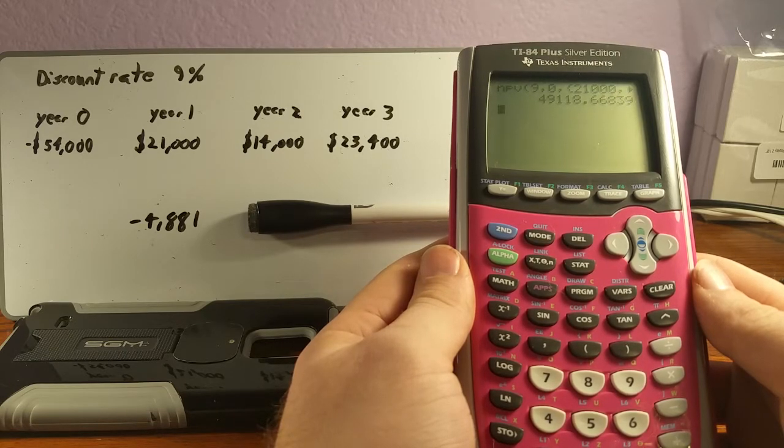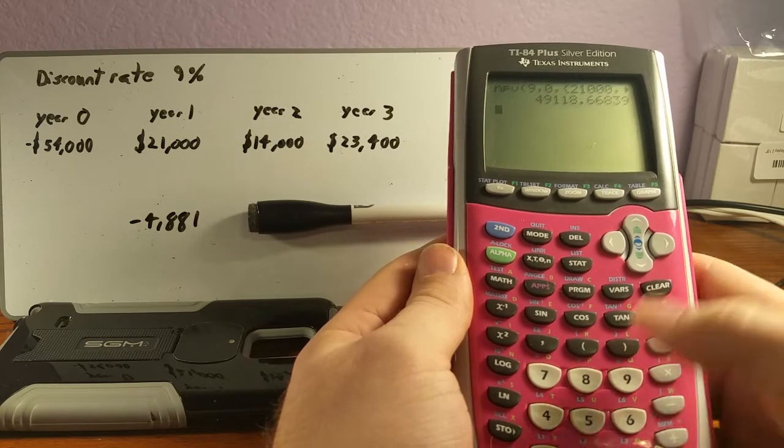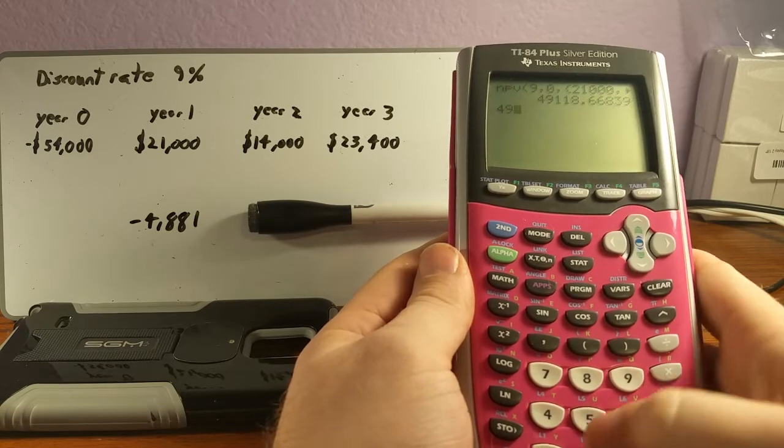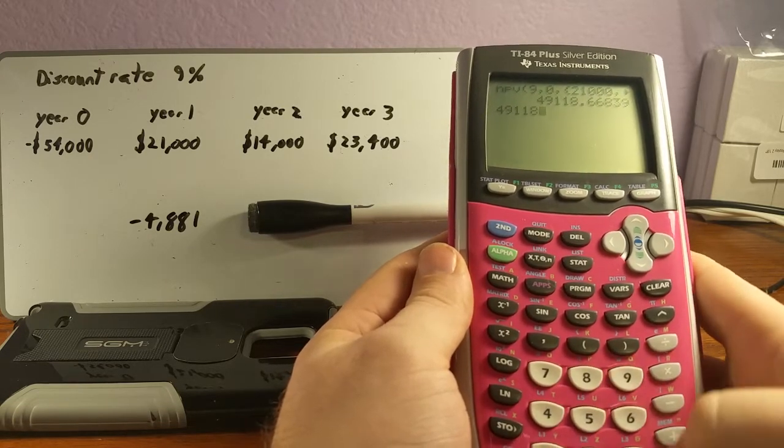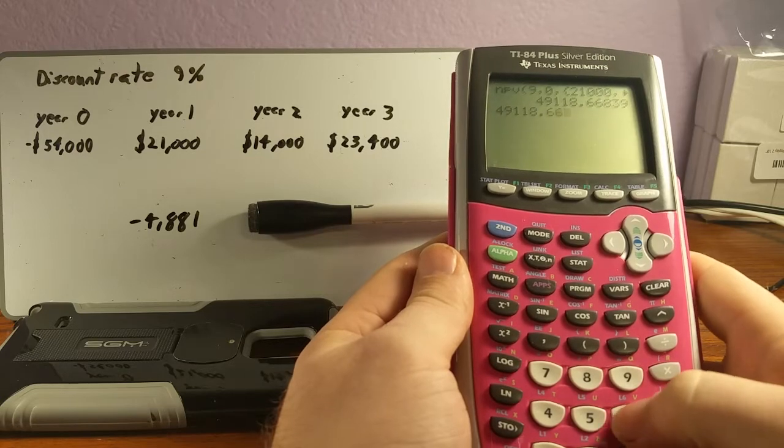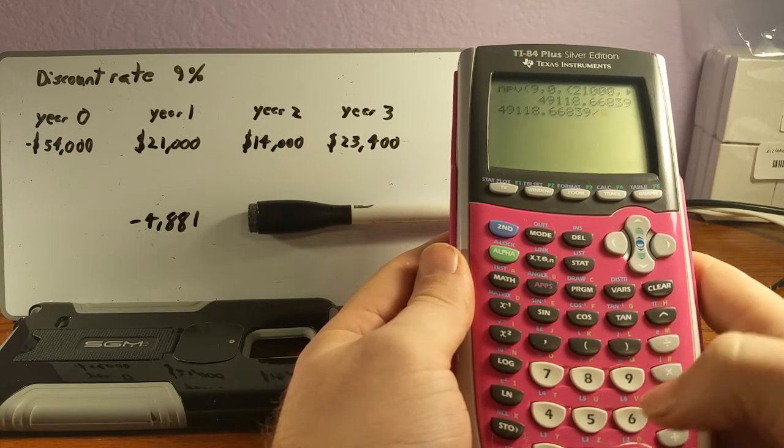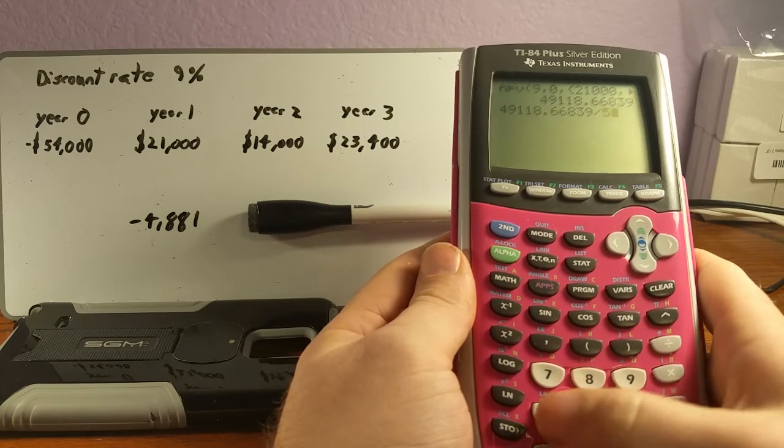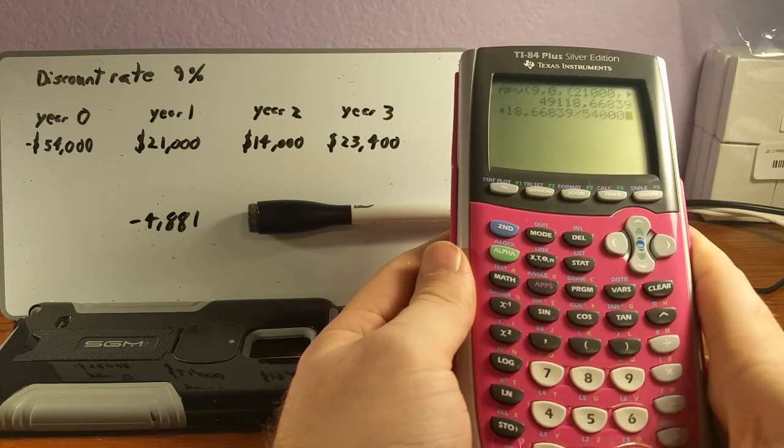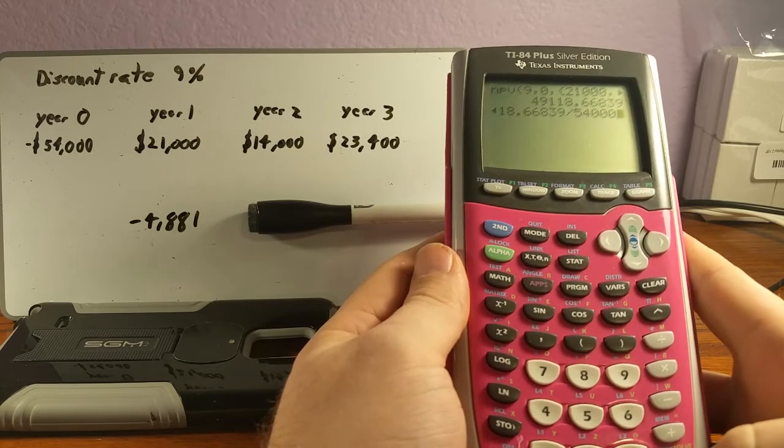Now we're going to divide that $49,118.66839 divided by how much we spent or how much we were looking at spending at the beginning of the project, which is $54,000.